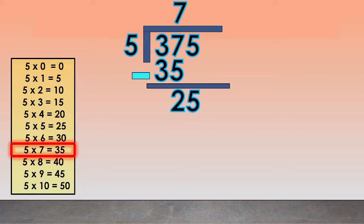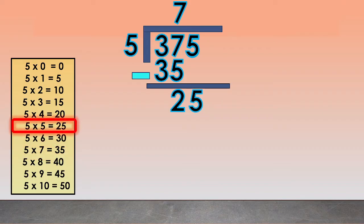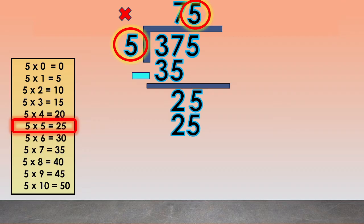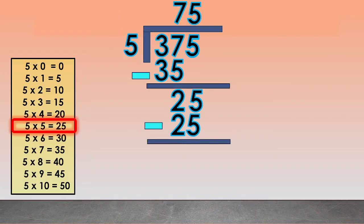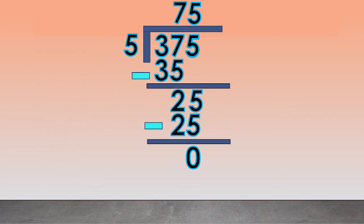Now find how many 5s go into 25. We will use again the multiplication table of 5. We will use 5 times 5 equals 25. We write the 5 above the 5. Then multiply 5 times 5 equals 25. Subtract 25 minus 25 equals 0. Since we are not left with any digits of the dividend to bring down, we are finished. The quotient is 75.